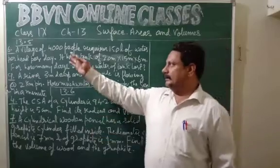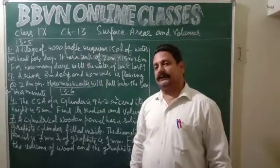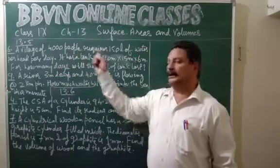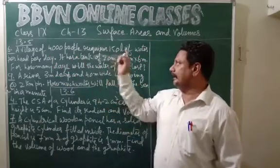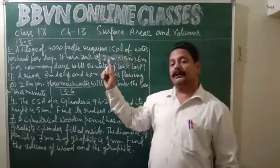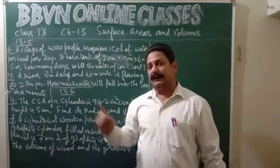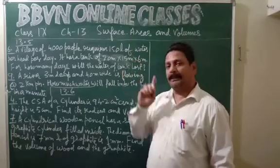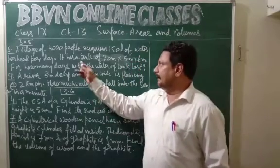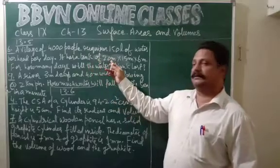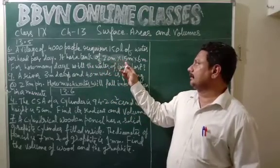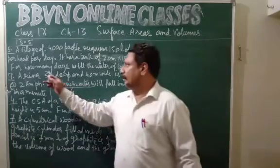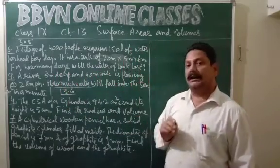Question number 6 of exercise 13.5: A village of four thousand people requires 150 liters of water per head per day. Each person requires 150 liters of water per head per day. It has a tank of capacity 20 meters cross 15 meters cross 6 meters. For how many days will the water of the tank last?